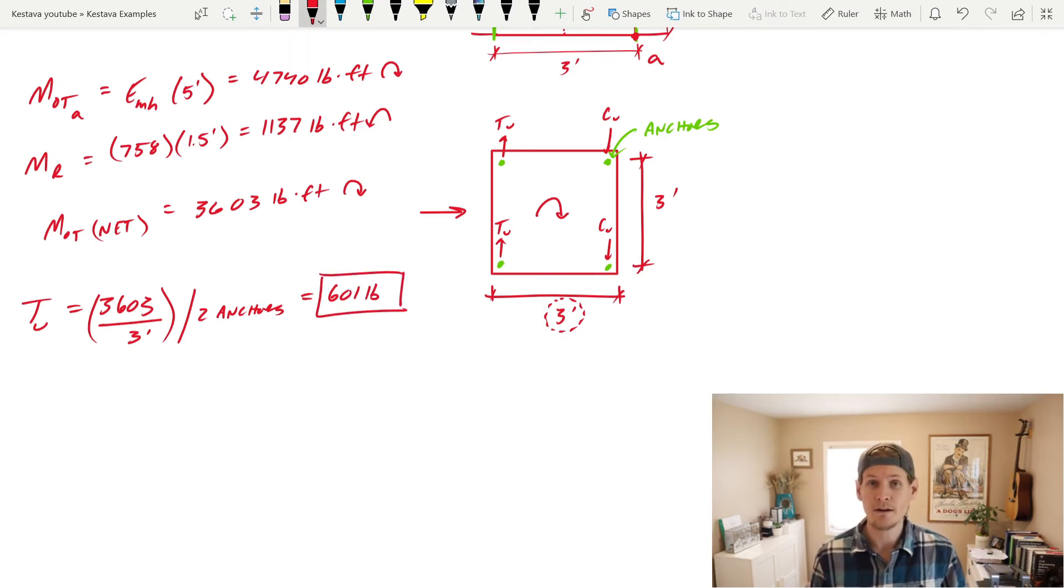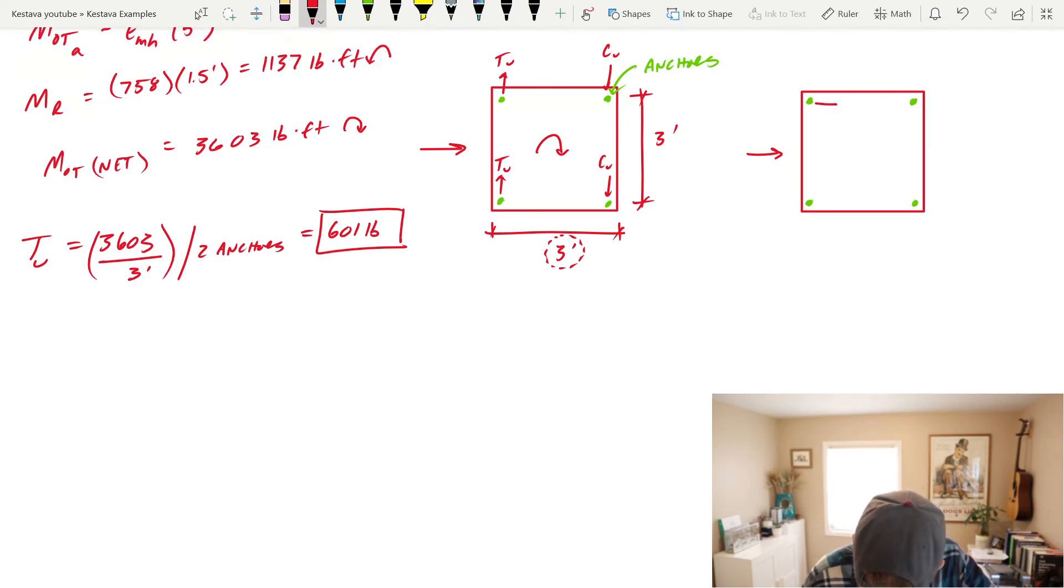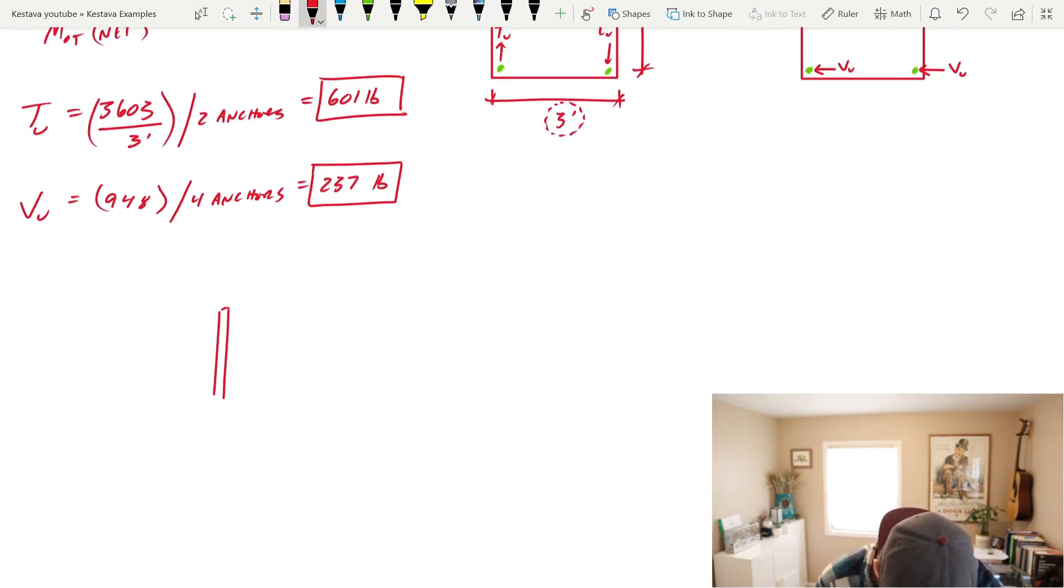And we also need to account for shear that's going to be resisted by those anchors as well. And again, you have your force moving left to right. And in this instance, all four anchors are going to resist shear evenly. So VU is just equal to your total horizontal seismic force, which we know is 948 pounds, and it's just divided by four anchors resisting that demand, which gets us 237 pounds per anchor.